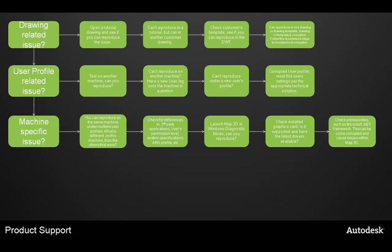If it's machine specific — meaning you can reproduce it on the same machine under multiple user profiles — ask what's different on this machine compared to others that work. Do you have different drivers installed? Third-party applications? Different user permission levels? Are all system specifications the same? We want to launch Map 3D in Windows diagnostic mode and see if you can reproduce it then. Check the installed graphics card — is it supported, and do you have the latest drivers? There's a database on Autodesk support pages for certified graphics cards. Also check prerequisites such as Microsoft .NET Framework, which is a common source of corruption causing issues within Map 3D.